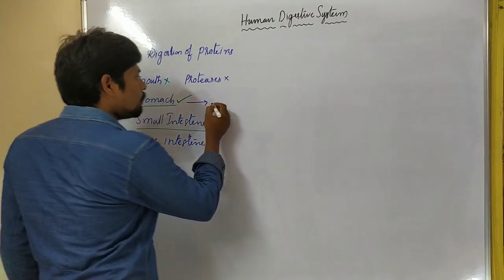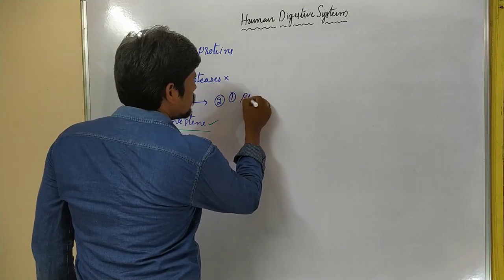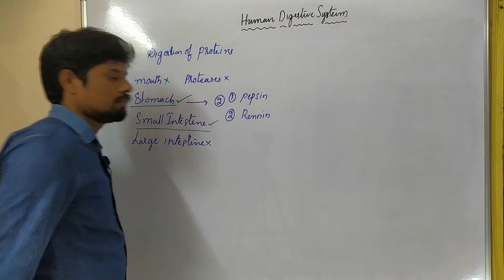So let us see how digestion of proteins takes place in the stomach and in the small intestine. In the mouth, there is no digestion of proteins because of the lack of any proteases. So let us come to the stomach. The stomach is the site where digestion of proteins is actually initiated. The stomach produces two enzymes: enzyme one is pepsin, and enzyme two is rennin.